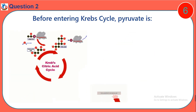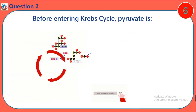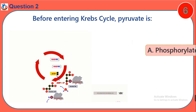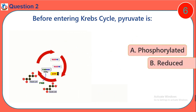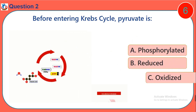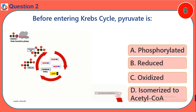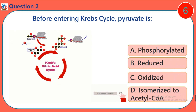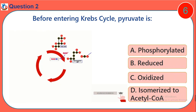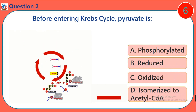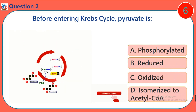Question 2. Before entering the Krebs cycle, pyruvate is: A. Phosphorylated. B. Reduced. C. Oxidized. D. Isomerized to Acetyl-CoA.